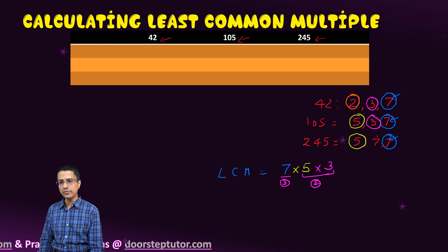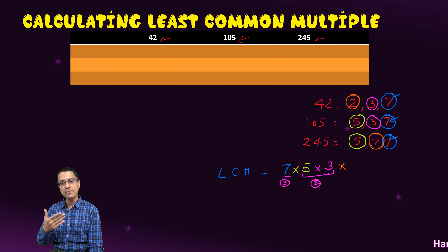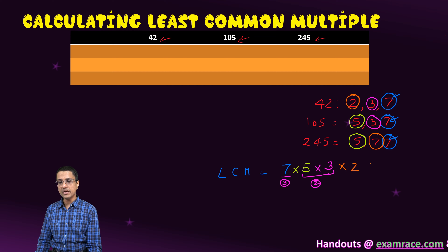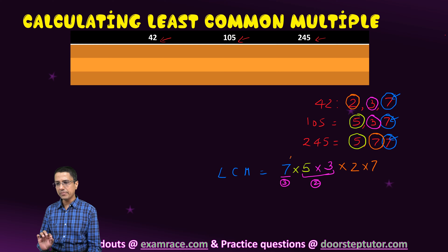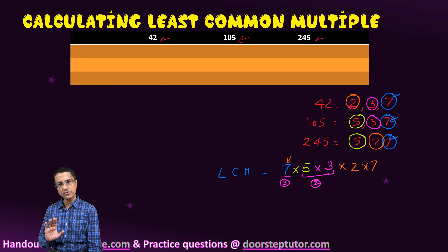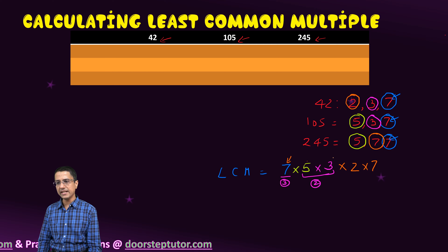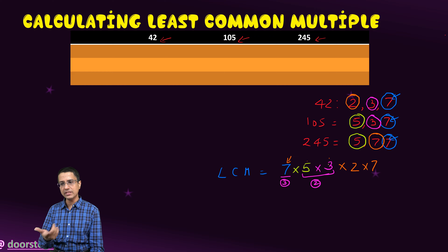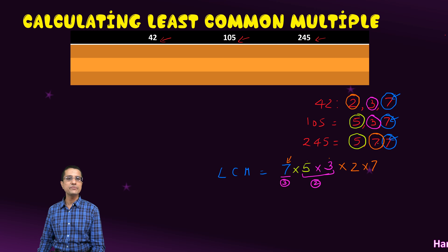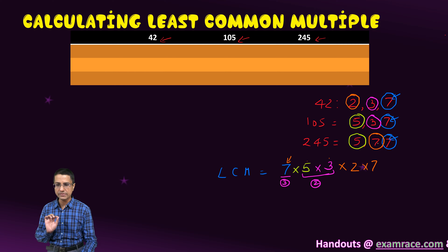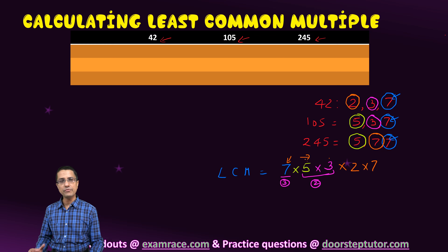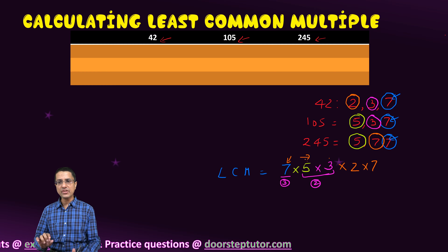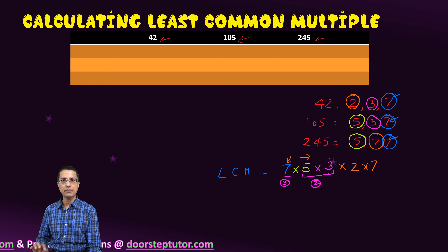Then finally, we also take the 2 and the 7 which have been left and are present in only one of the numbers. We do not leave out any factors. We first take the factor present in all 3 numbers just once, then factors present in any 2 numbers just once, and then factors left in only one number. The key difference is that we continue taking factors until we have extracted every factor of each number — that is the thing to note.